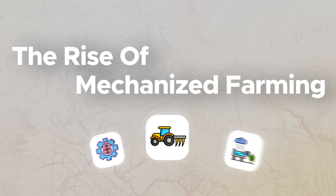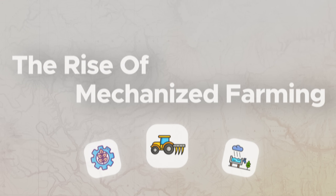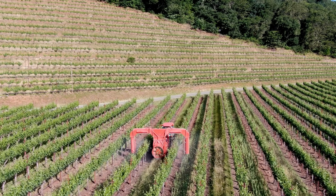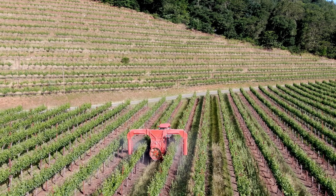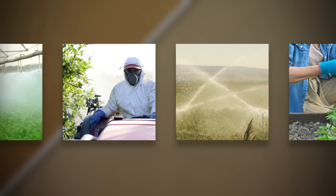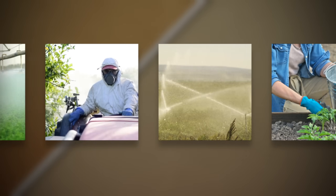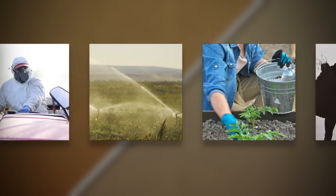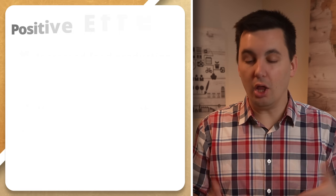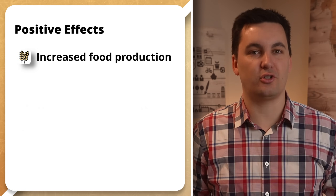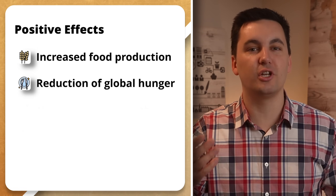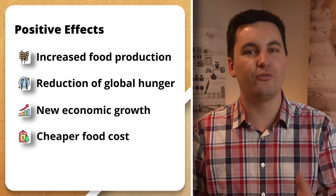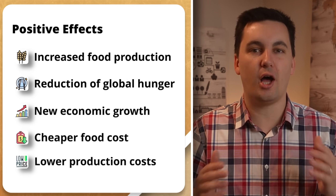Lastly, we saw the rise of mechanized farming, with new machinery often replacing manual labor, making farming more efficient. Tractors, irrigation pumps, and harvesters started to become more and more common across the agricultural landscape, all of which led to increased food production, a reduction in global hunger, new economic growth, cheaper food, and lower production costs.